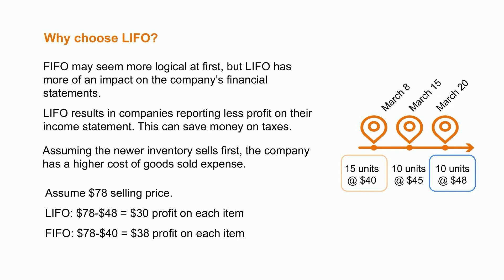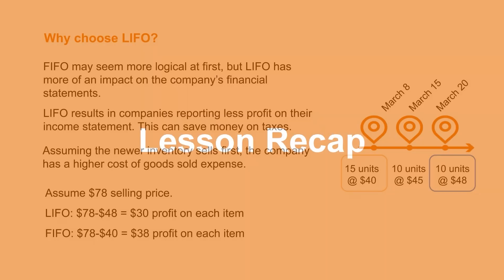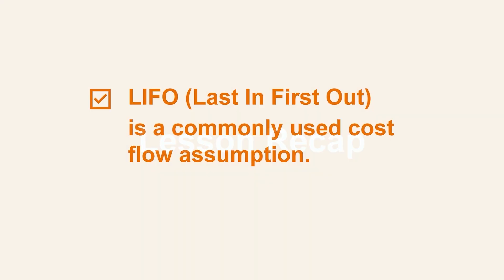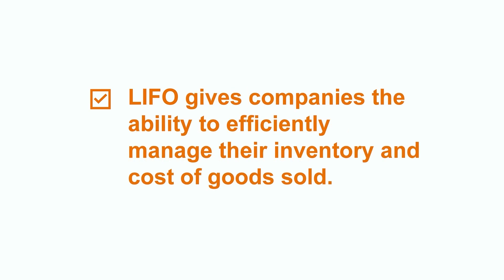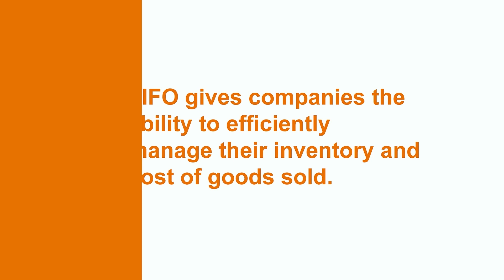Companies are able to justify using LIFO because matching the latest costs with the latest sales revenues is a better indicator of the company's current profitability. And that brings us to the end of this video. LIFO is a commonly used cost flow assumption that gives companies the ability to efficiently manage their inventory and cost of goods sold. Whether you're a student, investor, or business owner, it's important to understand how LIFO and other cost flow assumptions work, as they can have a major impact on a company's financial statements. Now, while we just skimmed the surface here in this video, if you're interested in learning more, please feel free to check out our additional videos on many more related topics.